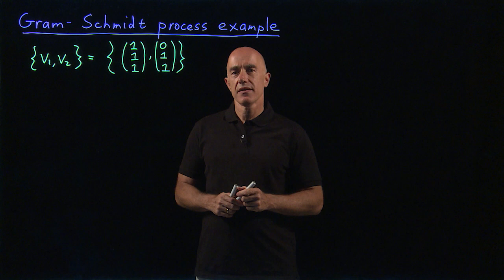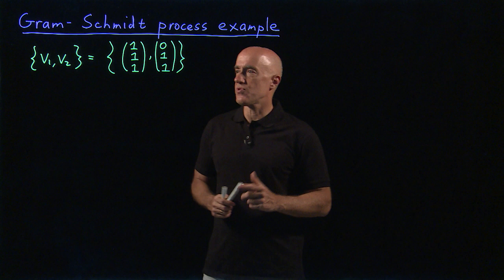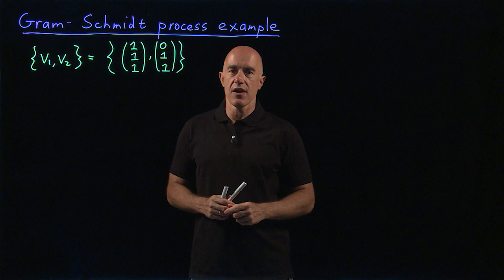Maybe the description was a little abstract, so it helps to work a simple example. So let's start with two ordinary basis vectors, V1, V2. These are our column vectors: (1,1,1) and (0,1,1).